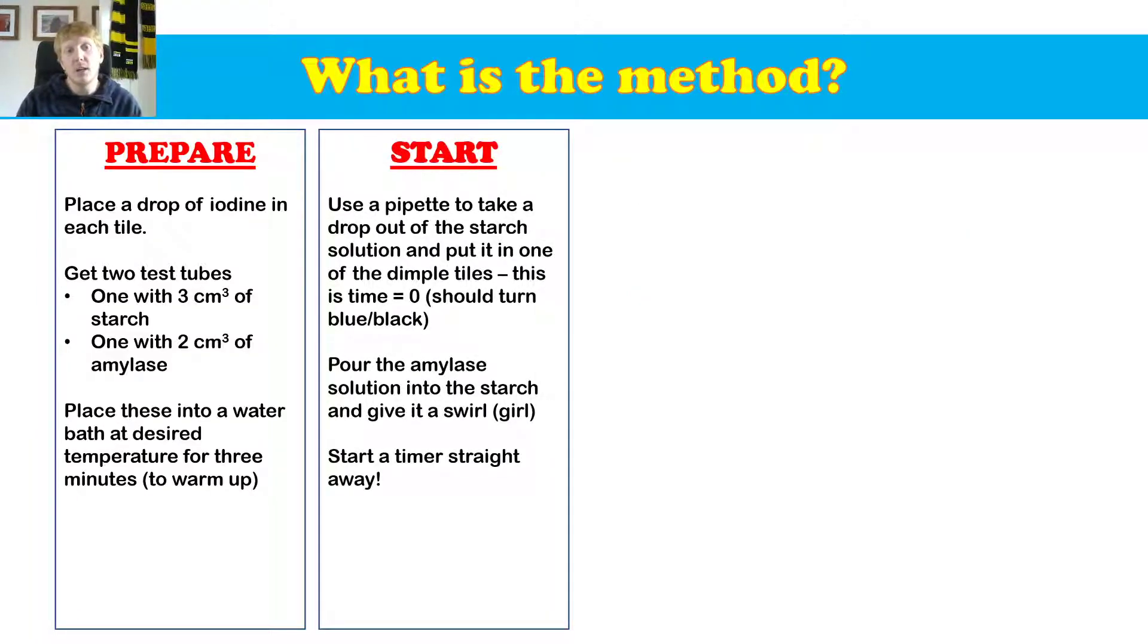Next, so we're going to start. We're going to use a pipette to take a drop out of the starch solution before we've added anything to it, and pop it on that first tile. This is time zero, and you would expect it to turn blue-black.